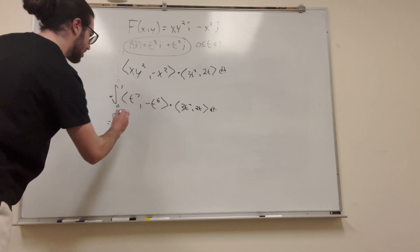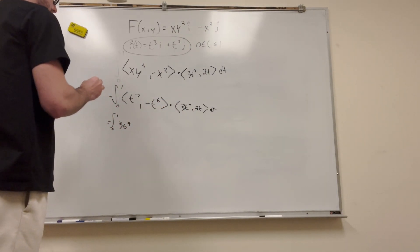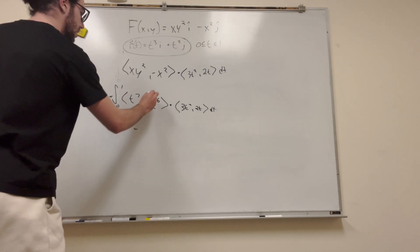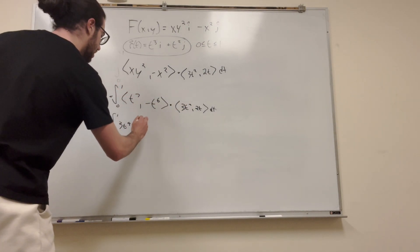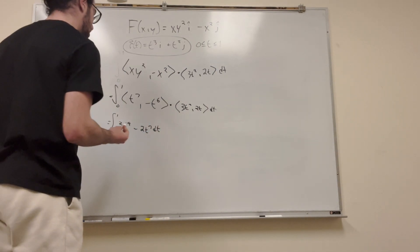So, let's see. That's going to be 3t to the ninth, right? Pretty big number. And then minus. So, that's going to be 2t to the seventh, right? Pretty easy. And from here, just power rule.